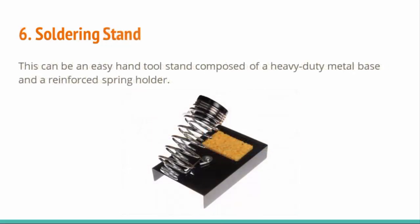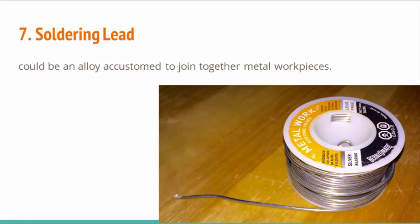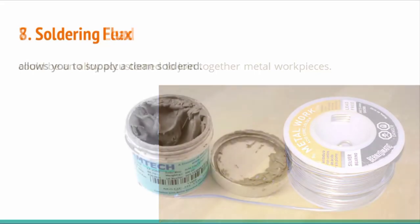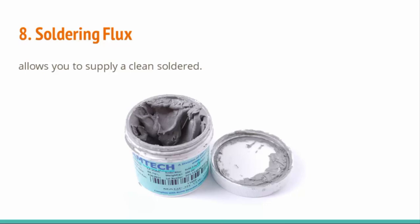Number 6: Soldering stand — a handy tool stand composed of a heavy duty metal base and a reinforced spring holder. Number 7: Soldering lead — an alloy used to join together metal work pieces. Number 8: Soldering flux — it allows you to produce a clean solder joint.